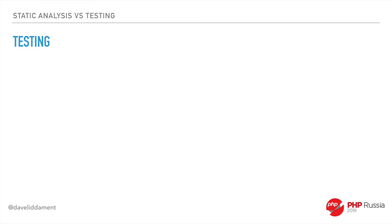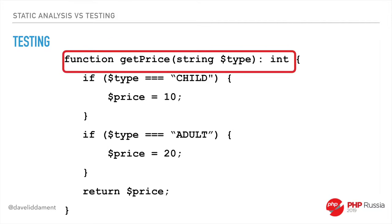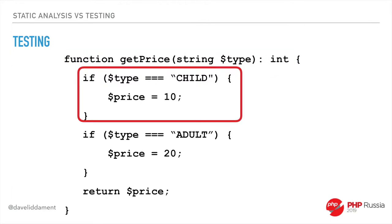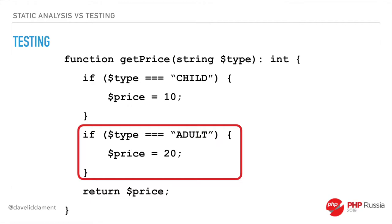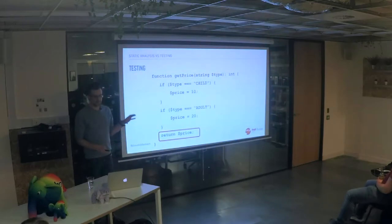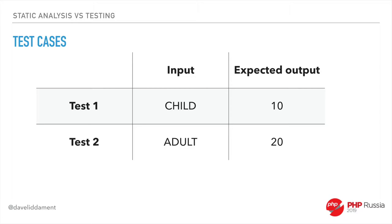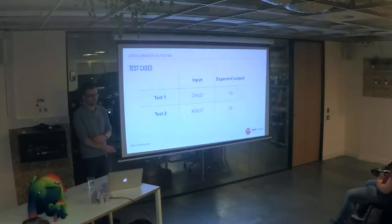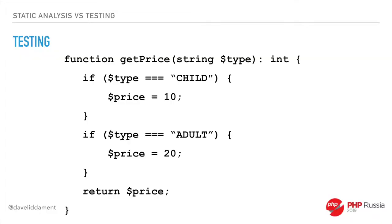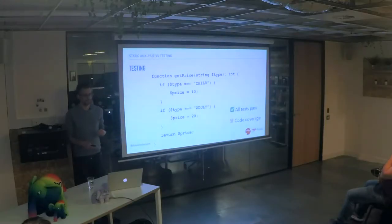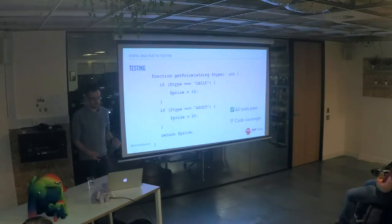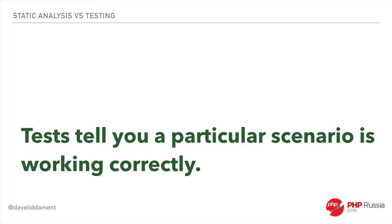Let's think about testing. Imagine we've got some relatively simple code — it's trying to get the price of something, returning an integer, passing in a string which is the type. If type is 'child', we set price to 10. If type is 'adult', we set price to 20, and then we return price. If we applied test cases with input 'child' expecting 10 and input 'adult' expecting 20, all our tests would pass and we'd have 100% code coverage — every single line executed, every if statement hit both true and false. Tests tell us for the particular scenarios we tested that everything is correct.